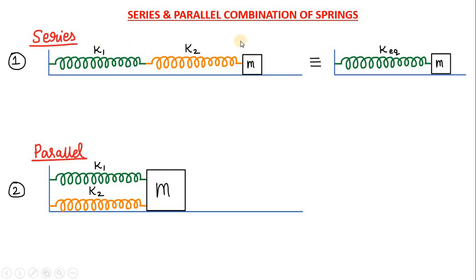In another way, let us imagine the potential energy stored in the spring. Suppose this block is given a displacement towards the right side, so both the springs will get elongated. Then the first spring will store some potential energy and the second spring will also store potential energy. In the case of this equivalent spring, if we displace the block by the same amount, then this equivalent spring will also store potential energy. So if the potential energy stored in this equivalent spring is equal to the sum of the potential energy stored in k1 and k2, then we will say that this k equivalent is the equivalent spring constant of k1 and k2.